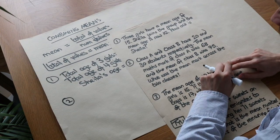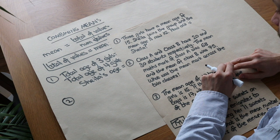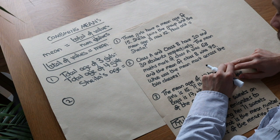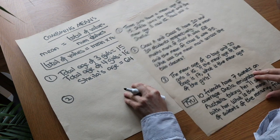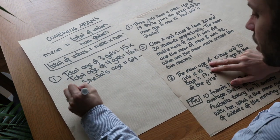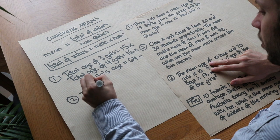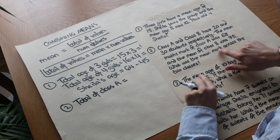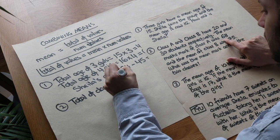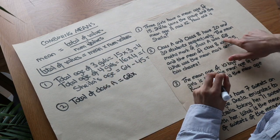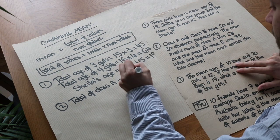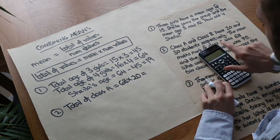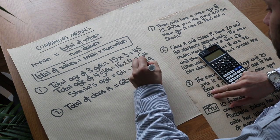Question 2: Class A and Class B have 20 and 30 students respectively. The mean mark of Class A was 68 and the mean of Class B was 75. What was the mean mark across the two classes? The total mark of Class A is the mean of Class A (68) times the number of people in Class A (20), which gives 1360.